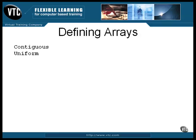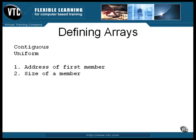This means that the location of any member can be calculated by knowing three things: the address of the first member of the array, the size in bytes of each member, and the index of the desired member. The index of the first member is zero. You can use other numbers to start the indexing, but it only makes the calculation of addresses a little more complicated.